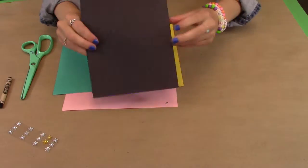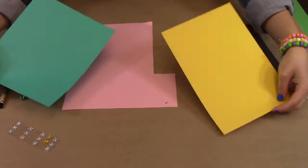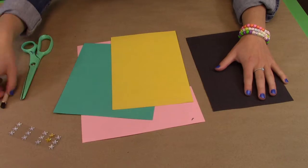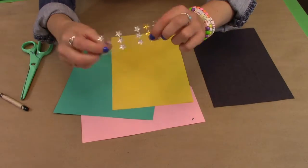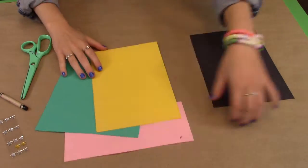In your supply bag you'll have a black piece of paper and some other colored sheets. You're also going to need a crayon to write a word, some scissors and some glue. You're also going to use your star stickers to decorate it.